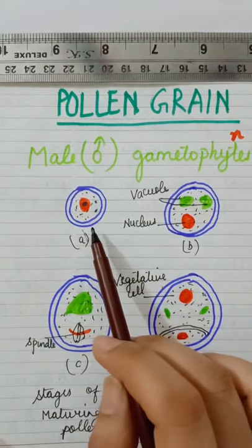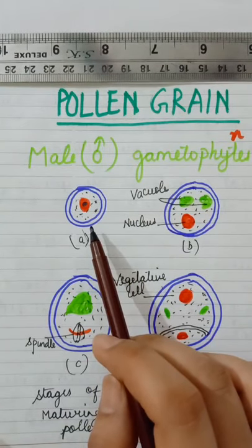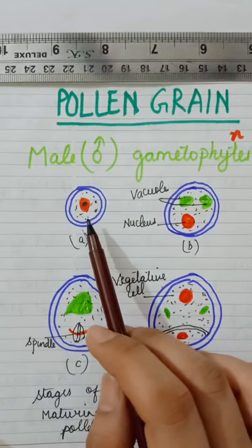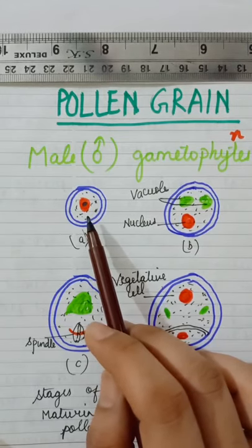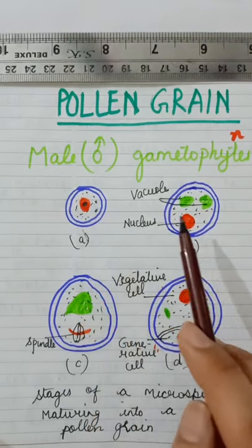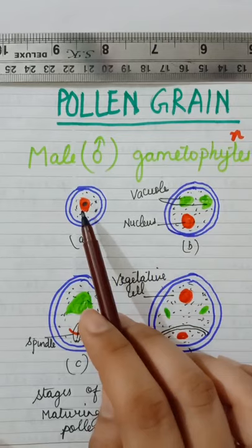Freshly formed microspore. This is the freshly formed microspore. It has rich cytoplasm with centrally placed gametophyte and prominent nucleus. See, this is the nucleus, the prominent nucleus inside it.